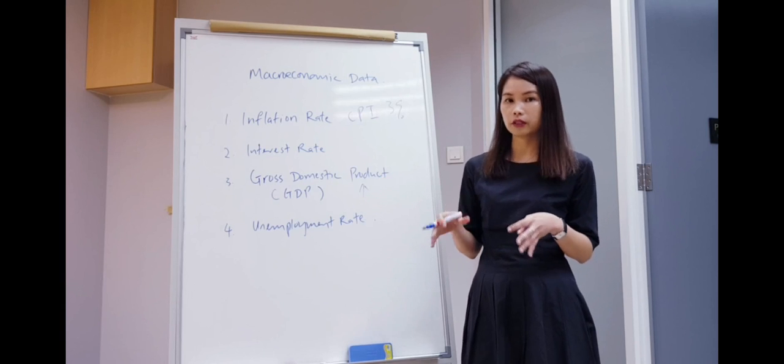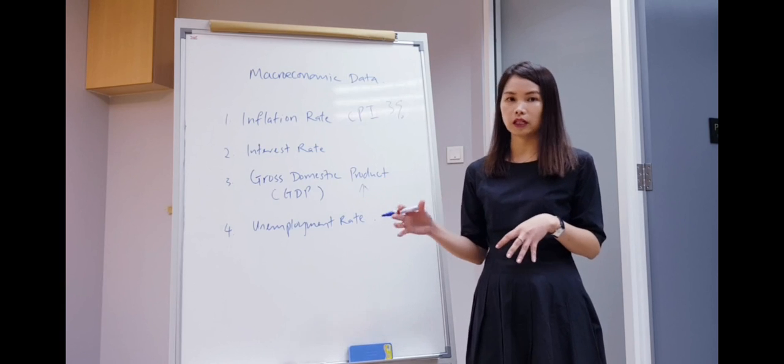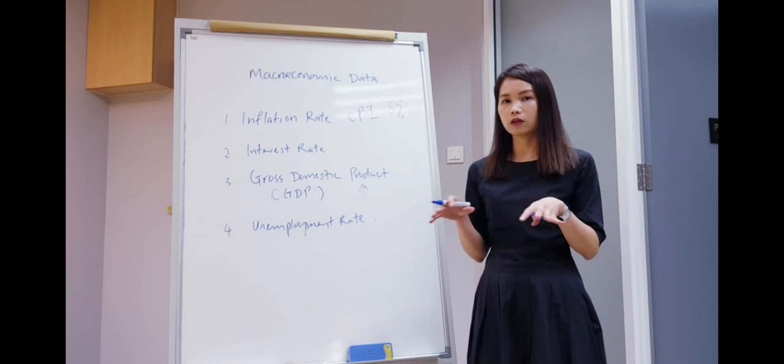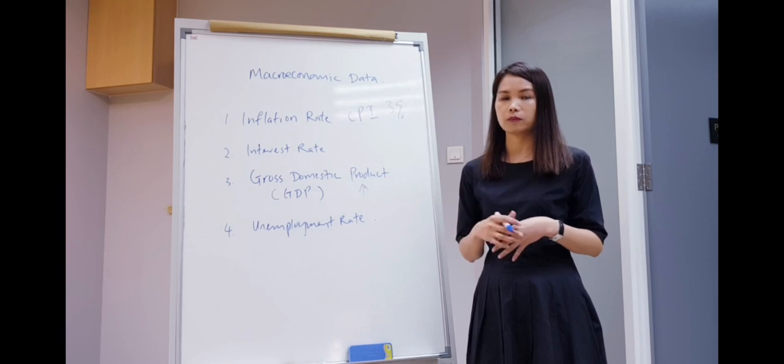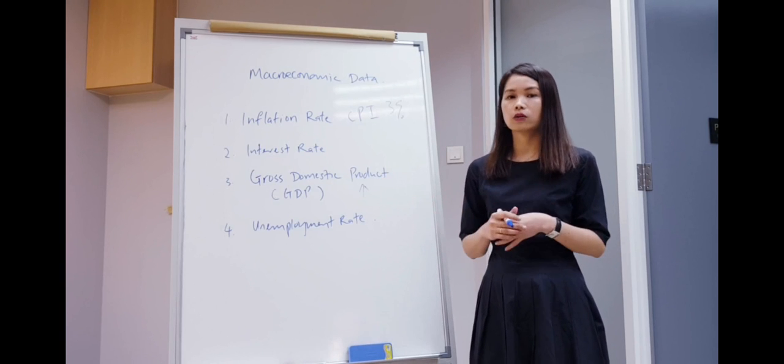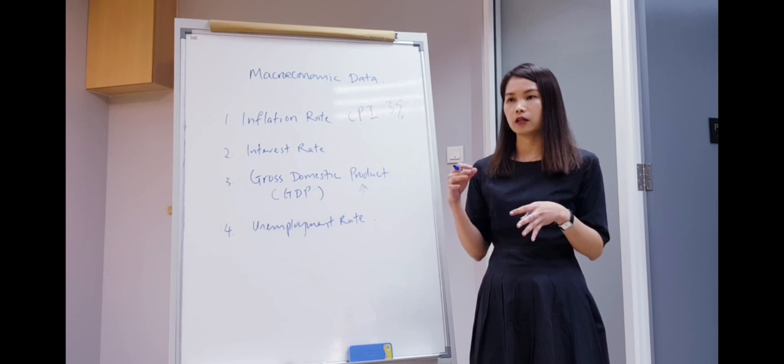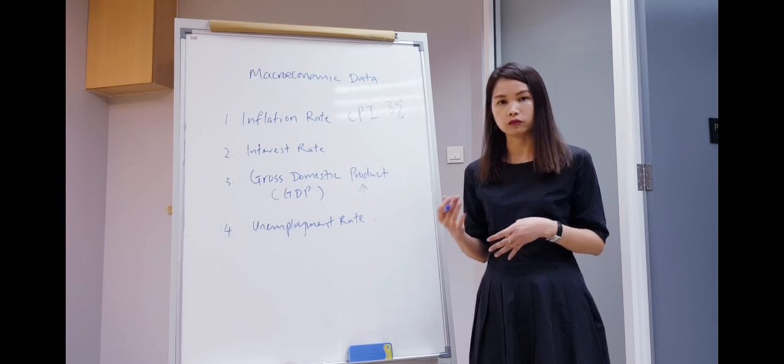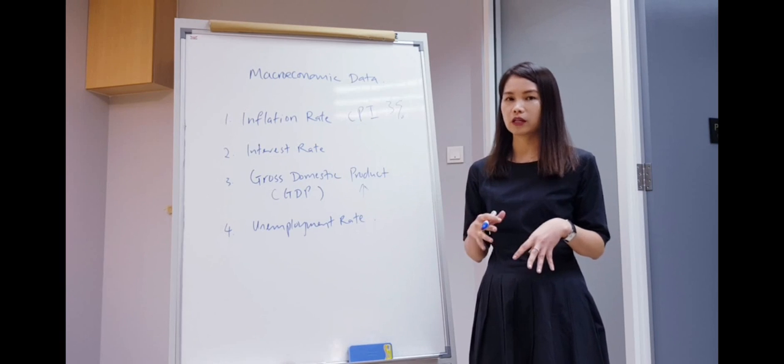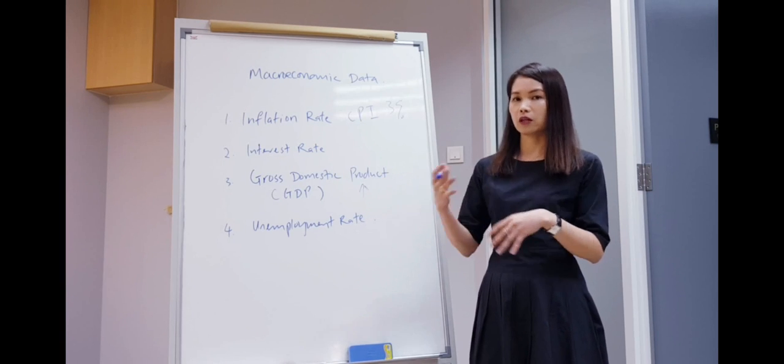Different countries will have different sets of GDP numbers. For example, for Malaysia, our normal healthy growth rate is about 5%, between 4% to 5%. If we are running around 6%, it means we are doing very well. However, if we are running about 3%, 2%, it means our economy is slowing down.